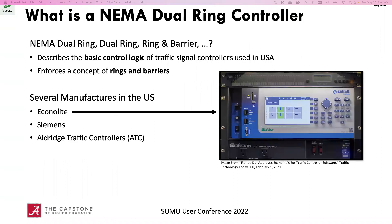What is a NEMA-style dual ring controller? The first thing to clear up is some of the language used around it. You may hear it referred to as a NEMA controller, a NEMA dual ring controller, or a ring and barrier controller. All these terms basically refer to the core logic of the controller — the concept of rings and barriers that really determine how the controller works. There are several manufacturers in the U.S., including Econolite, Siemens, and Aldridge traffic signal controllers. Over to the right you see an image of a modern Econolite controller, and on that display you can start to see the ring and barrier diagram, which anyone who works with dual ring controllers will be very familiar with.